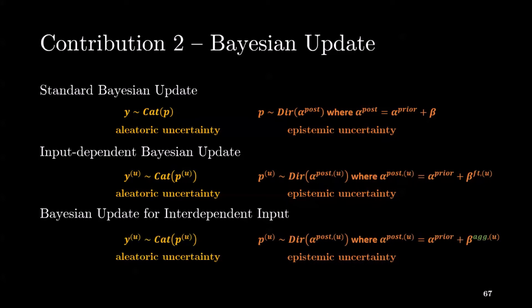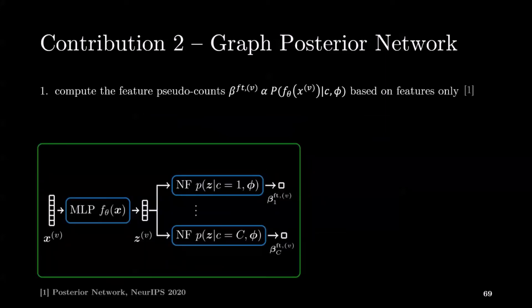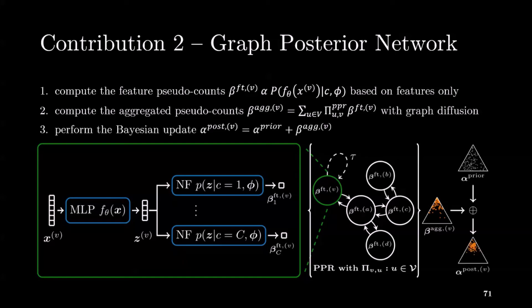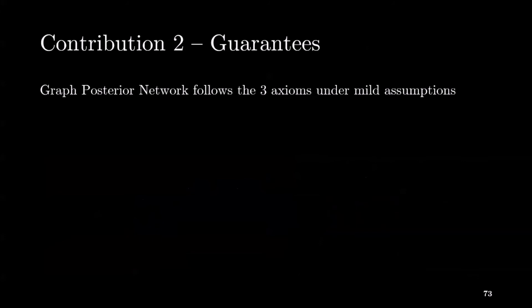The core idea is to replace the feature pseudocounts by aggregated class pseudocounts based on neighborhood features. The computation of the aggregated pseudocounts works as follows: first, given an input node, GPN computes the feature pseudocounts which account for uncertainty without network effects; second, by diffusing the feature pseudocounts using personalized page rank scores approximated with power iterations similarly to APPNP; and third, GPN performs the Bayesian update for interdependent inputs which recovers the prior when the aggregated pseudocounts are small. Importantly, GPN provides theoretical guarantees — we show three theorems indicating that graph posterior network follows the three axioms under mild assumptions.